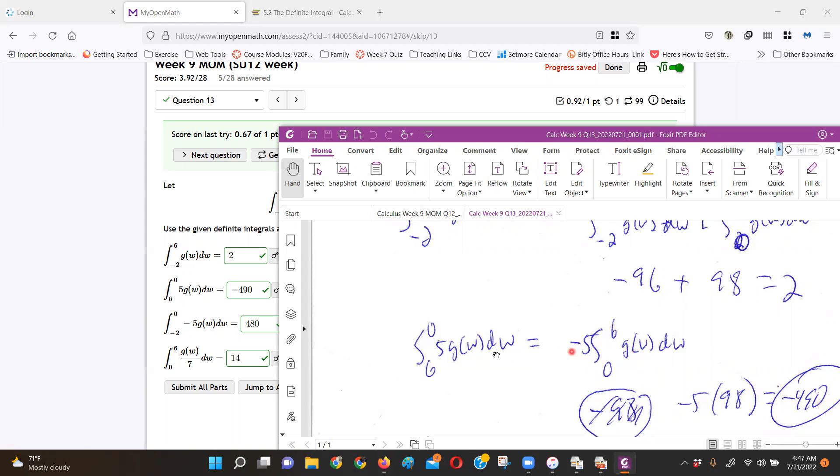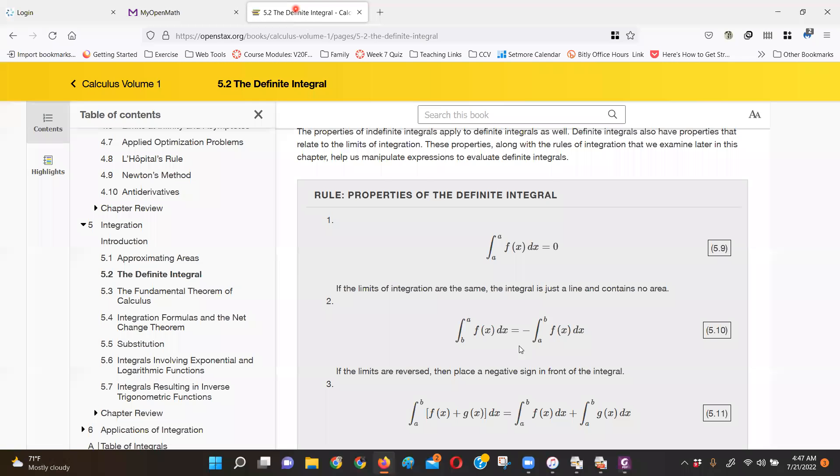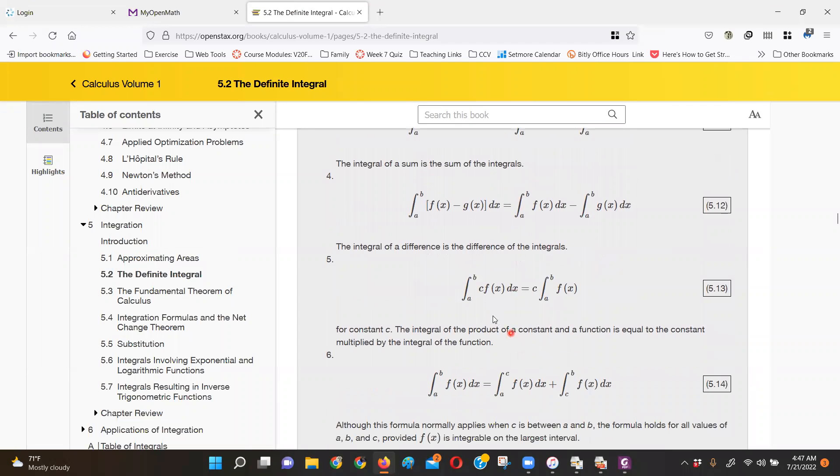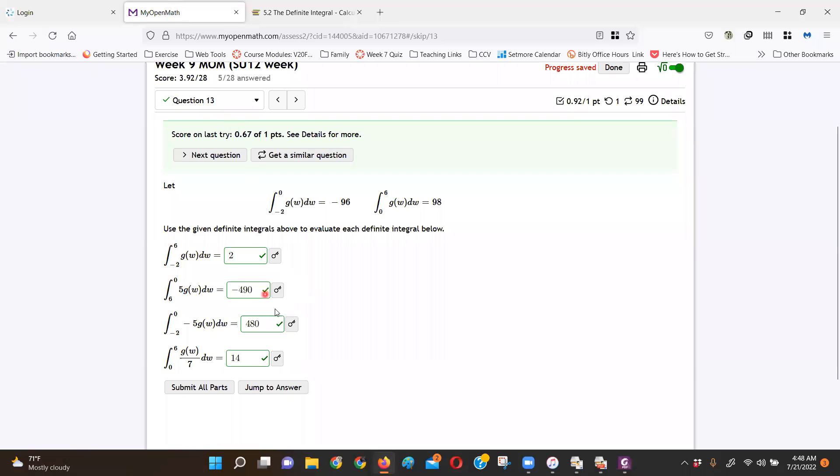Now, this brings up another integral property that if I have a constant multiplying a function inside the integral, I can just bring that constant out front, keep the work easier, worry about the function, and then just multiply the answer by 5. Okay? So that's what I did there.